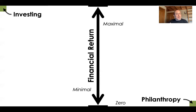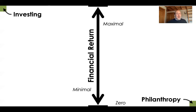In that framework, what is philanthropy — just on that one axis? Philanthropy is a negative 100% return. You are guaranteed to lose all your money if you give it away as a philanthropic grant or as a donation. You will not get any money back, and therefore it's negative 100%. The philanthropists don't like to hear that because it sounds really bad. But as an investment, it's a terrible investment. So we have maximal to zero.